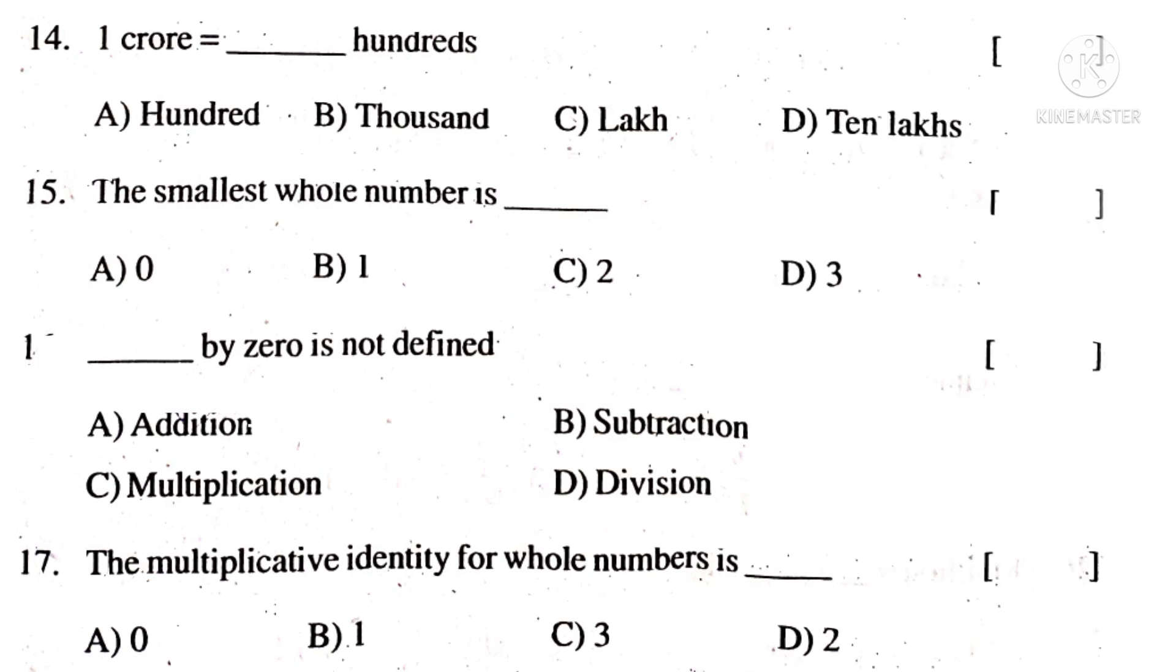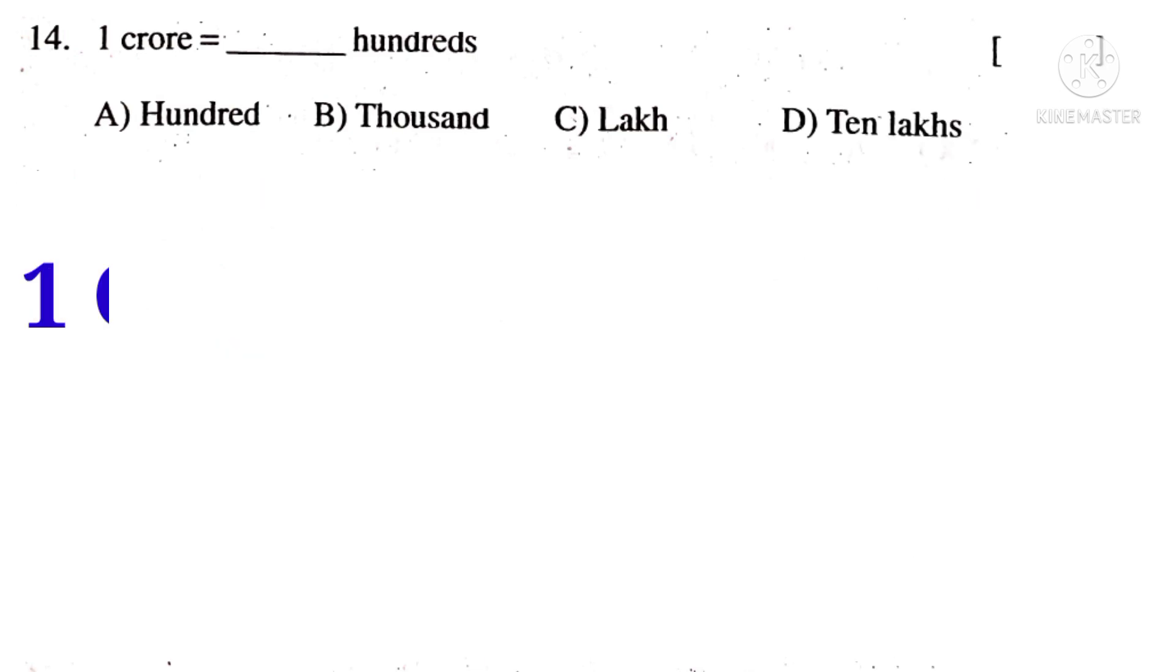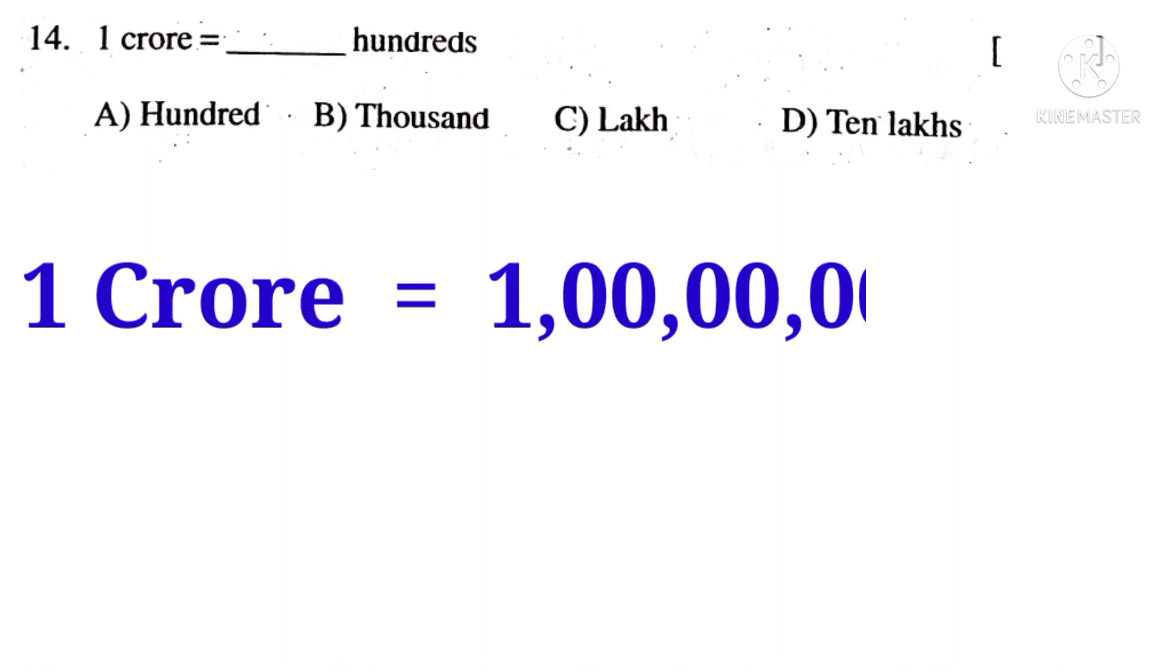14th question: 1 crore is dash hundreds. Let us write 1 crore is equal to 1 comma, 2 zeros comma, 2 zeros comma, 3 zeros. 100 has 2 zeros, so the remaining digits make 1 lakh. So 1 crore is 1 lakh hundreds. So the correct choice is C.